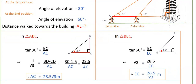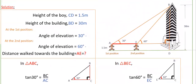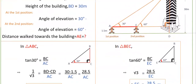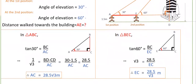In the second triangle BEC, the angle is 60 degrees. So tan 60 degrees equals BC by EC. Tan 60 is root 3, and BC is 28.5 — that is 30 minus 1.5. So root 3 equals 28.5 by EC. Therefore EC equals 28.5 by root 3 meters.